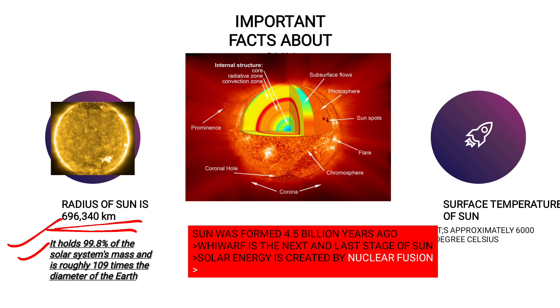It holds 99.8% of the solar system's mass and is roughly 109 times the diameter of the earth. Do remember the majority, or 99.9%, of the mass of our solar system is covered or is because of our sun. And the sun's diameter is roughly 109 times that of the diameter of the earth.